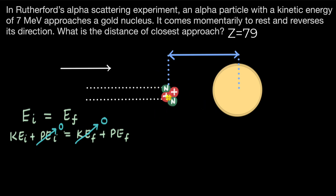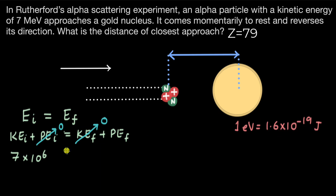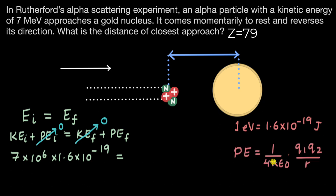The system is both the alpha particle and the gold nucleus. The initial kinetic energy is 7 mega electron volts, which we can write as 7 × 10⁶ electron volts, and one electron volt equals 1.6 × 10⁻¹⁹ joules. This equals the potential energy of the system, given by the relation (1/4πε₀) × (q1 × q2) / D, where D is the distance of closest approach. The constant 1/4πε₀ has a value of 9 × 10⁹, so we write 9 × 10⁹ × q1 × q2 / D.